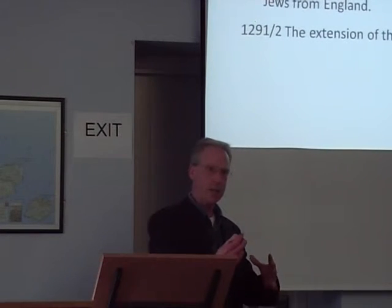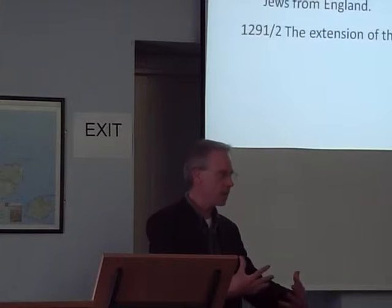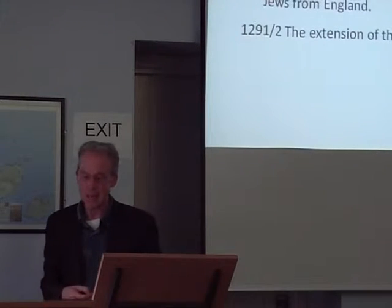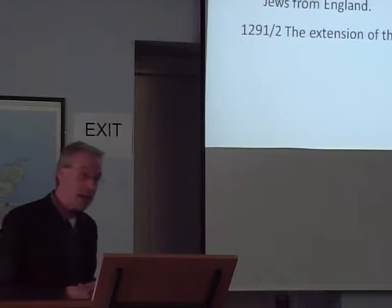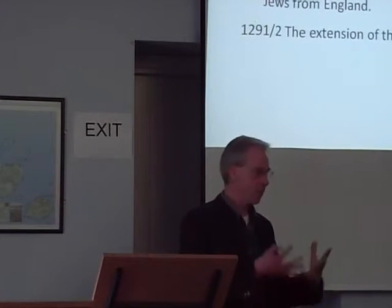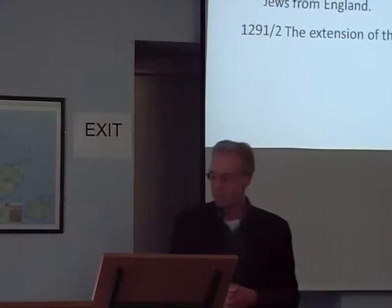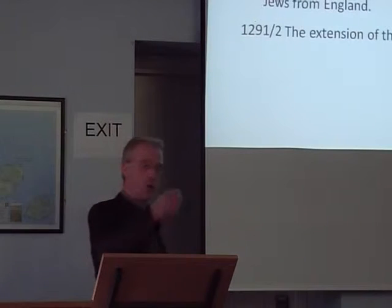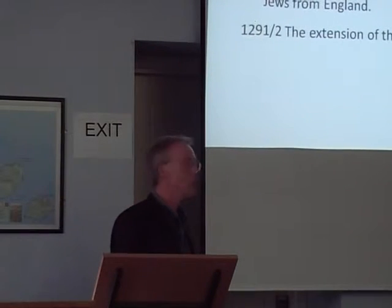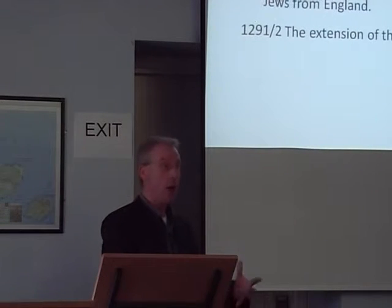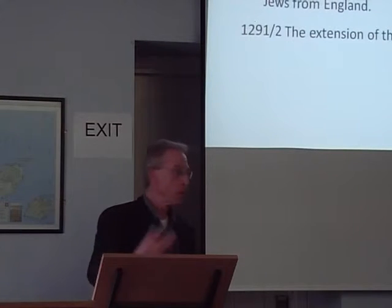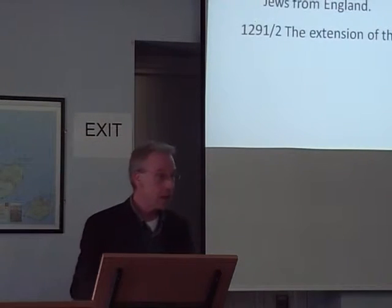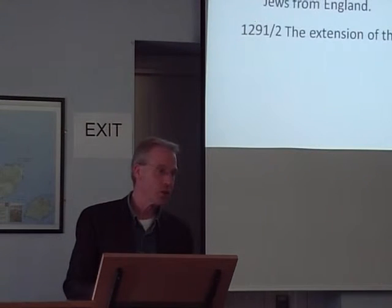Edward I in England was trying to generate a process of regular, periodic taxation. He still had to go to Parliament every time, but he was doing it much more often. In 1290, Edward I was granted a fifteenth — that is, a fifteenth of everybody's moveable wealth — in return for which he agreed to expel the Jews from England. The quid pro quo for the aristocracy and bourgeoisie was that he expelled the Jews, to whom they all owed money. Then in 1291-92, Edward still didn't have enough money and made an attempt to extend this taxation to Ireland.